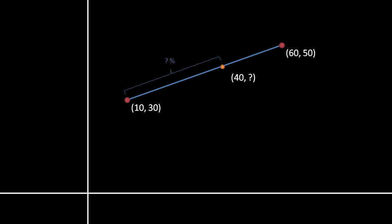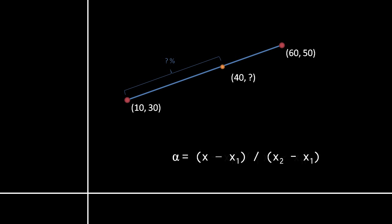One use of interpolation is to find the other half of a coordinate along a line. Here, we want to find the y value along a line that goes with the x value 40. To do so, we simply need to determine the alpha value — the interpolation value of 40 along the x-axis — then use that alpha value to find y. To determine alpha, we find the ratio of the distance between x and x1, and the distance between x2 and x1. Because the signs of the two subtractions always match, the division cancels out the negative signs, so we can drop the absolute value operators. Once we've found the alpha value, we can use it to find y.